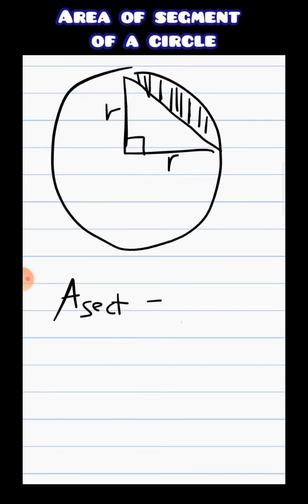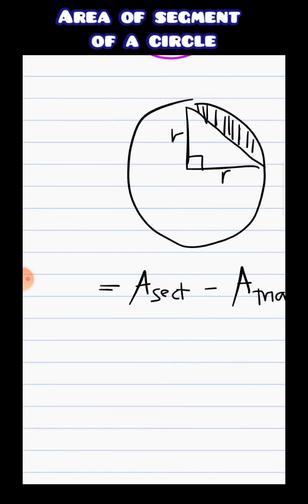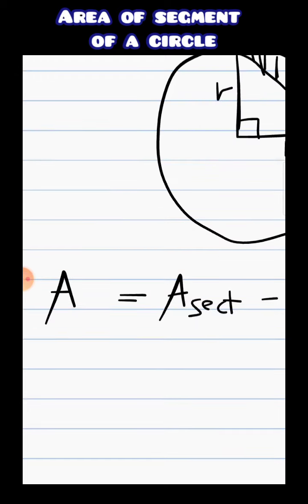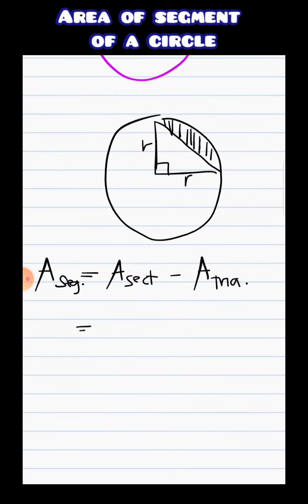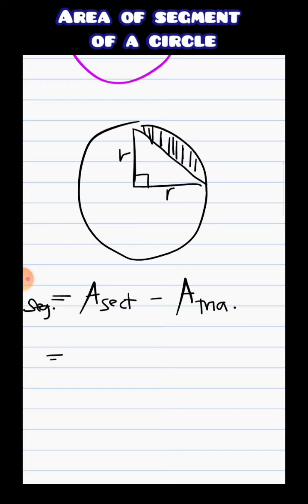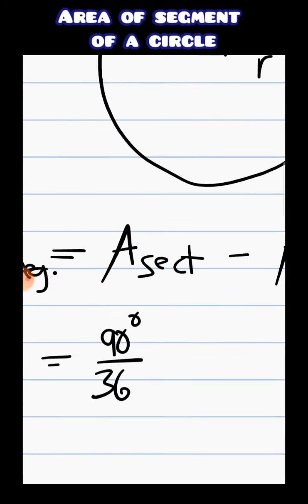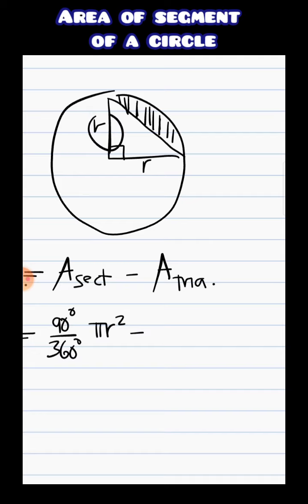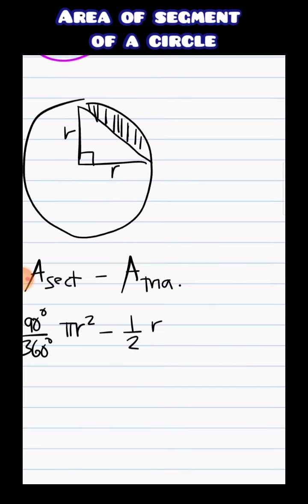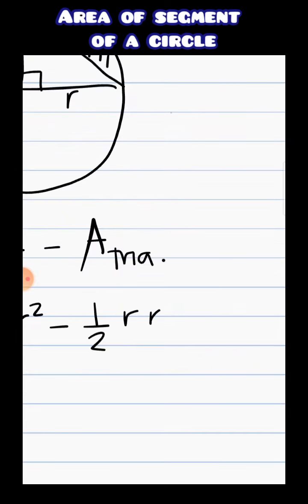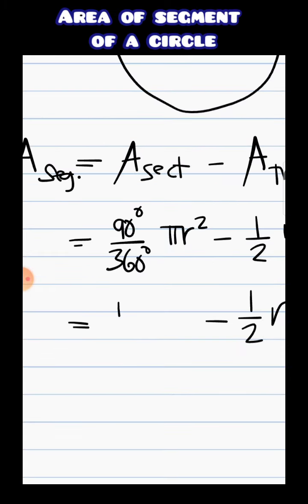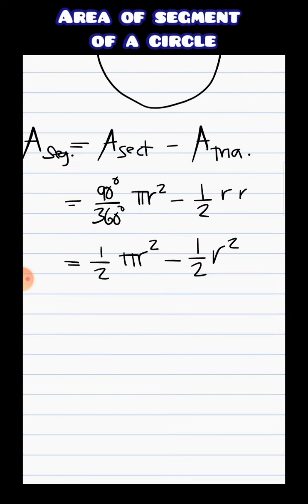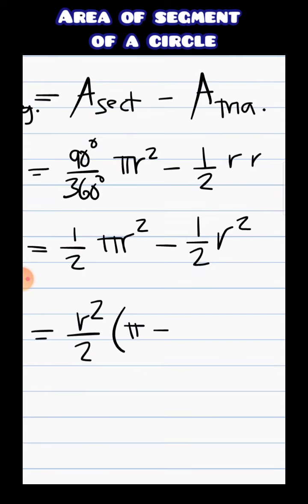So this is R, this is R, and this angle is 90°. Area of the sector minus area of the triangle equals area of the segment. The area of the sector — since this is just 90 degrees — is 90/360 times πr². Minus the area of the triangle: the base is R and the height is R, so that's one half R times R, or one half R squared. We have one half πR squared, and if we simplify and factor out the common terms, we have R²/2 times (π − 1).